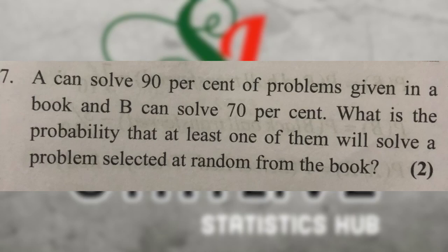Here is a problem: A can solve 90% of problems given in the book. B can solve 70% of problems. What is the probability that at least one of them will solve a problem selected at random from the book?